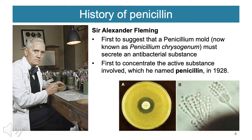The discovery of penicillin is attributed to Sir Alexander Fleming by a eureka moment in his laboratory. He was the first to suggest that a penicillium mold, now known as Penicillium chrysogenum, must secrete an antibacterial substance based on the growth patterns and clearing observed in his agar plate. He was the first to concentrate the active substance and aptly named it penicillin in 1928. Although penicillin is not the first antibiotic per se, some clinicians call penicillin the first true antibiotic because it changed management and treatment modalities when introduced in 1928.